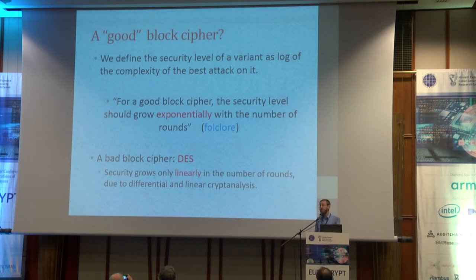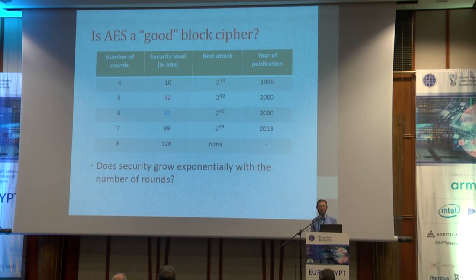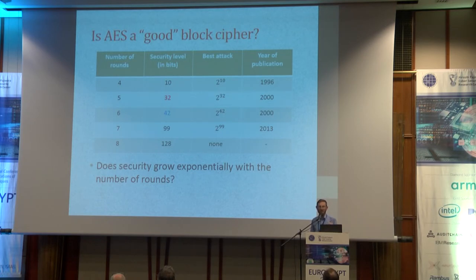What is a good block cipher? We know AES should be a really good block cipher — all of us believe it is secure. Is AES a good block cipher by this definition? Let's look at the number of rounds and the best known attacks. The security level in bits: AES has 10 rounds; 4 rounds has 10 bits of security, 5 rounds has 32, 6 rounds has 42, 7 rounds already 99. You can see the years of publication of the attacks — AES has been studied for 20 years and attacks appear quite rarely.